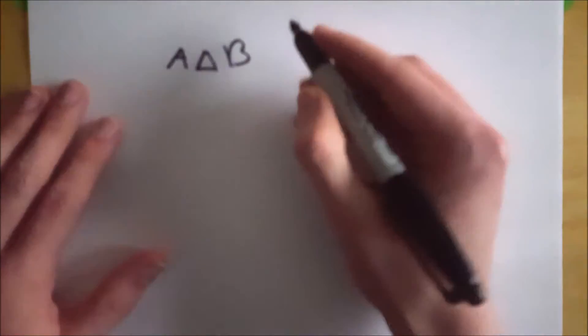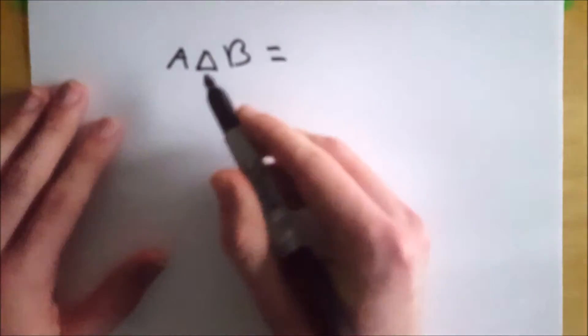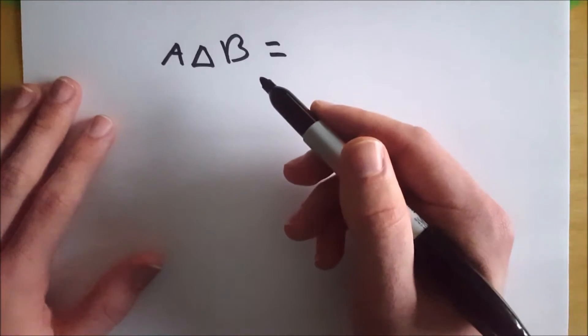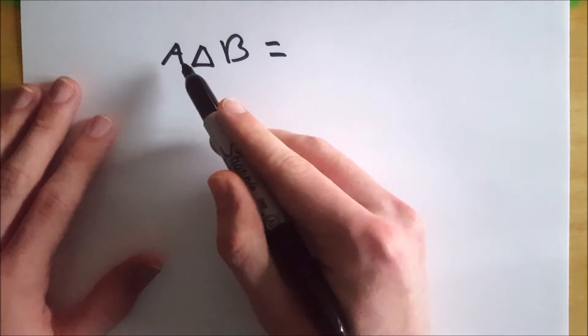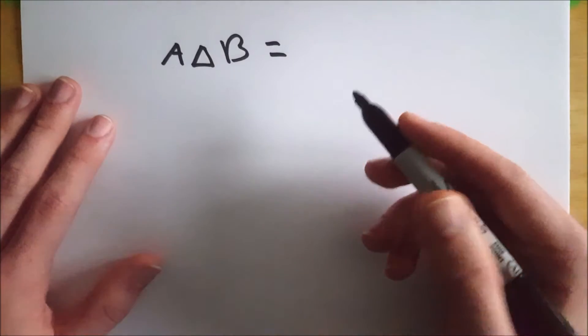And what is that? The symmetric difference of two sets A and B is the set that contains all elements that are in either A or B, but none of the elements that are in both.